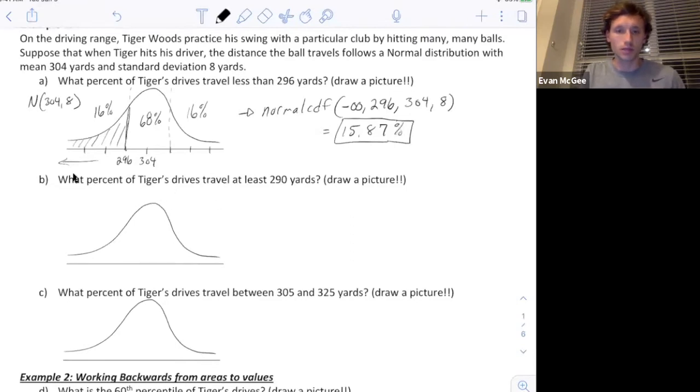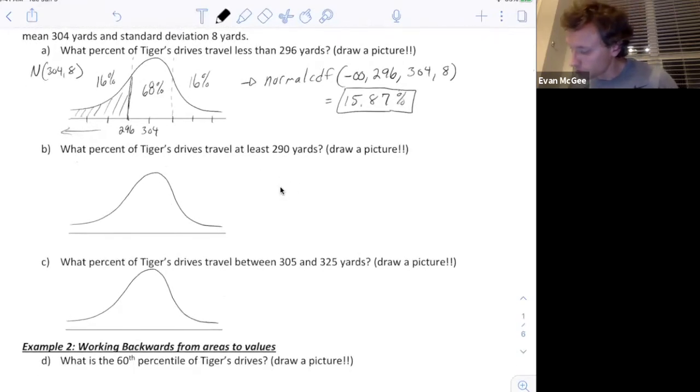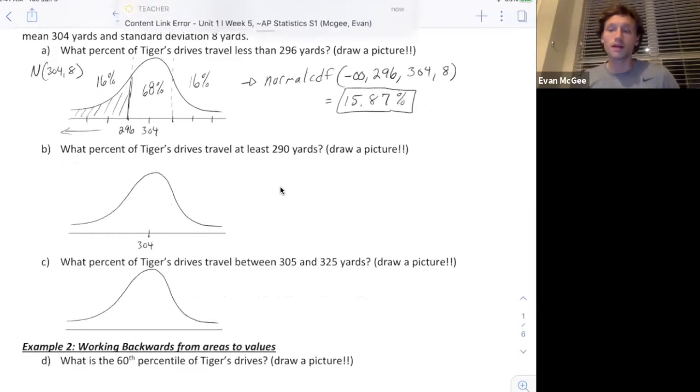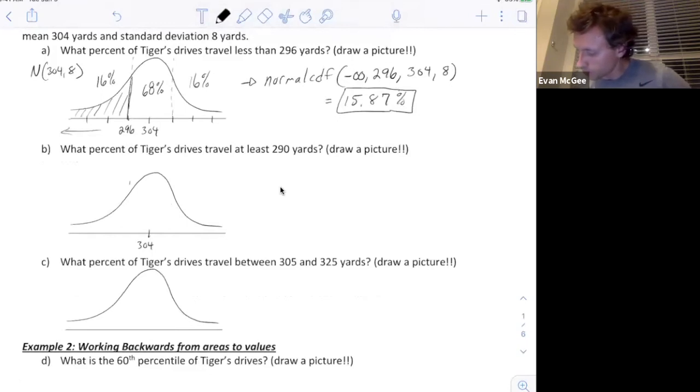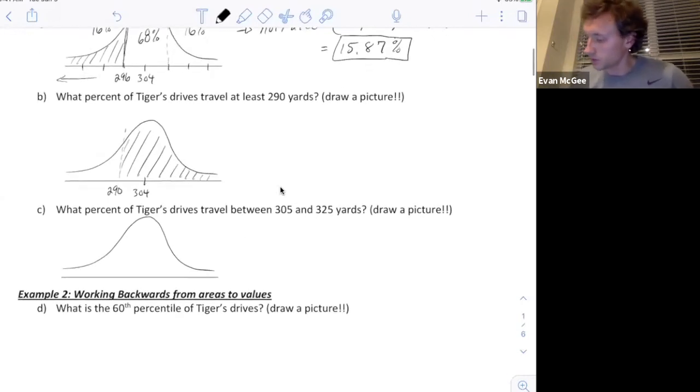We can use our calculator to find all kinds of areas or proportions. What percent of Tiger's drives travel at least 290? Sketch a picture. The reason you use the picture is to help you calculate or find the range that you're going to put in your calculator, the lower and upper bounds. The mean is 304, 290 will be somewhere below. We want to find the area above. In our calculator, we're going to go to normal CDF. My lower bound now is 290, going all the way to positive infinity. The mean is 304, standard deviation is 8.